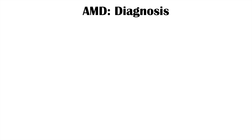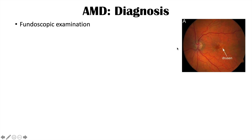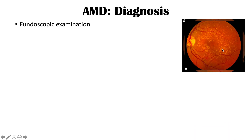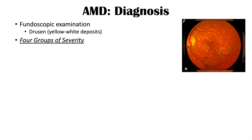Clinicians diagnose macular degeneration using fundoscopic examination. On fundoscopy, the macula is located on the temporal side of the optic nerve, and yellowish-white drusen deposits can be seen in and around the macula. In more severe cases, drusen spread to other areas. The Amsler grid can also be used — with metamorphopsia present, the grid appears distorted — and it can be used for self-assessment of progression over time.